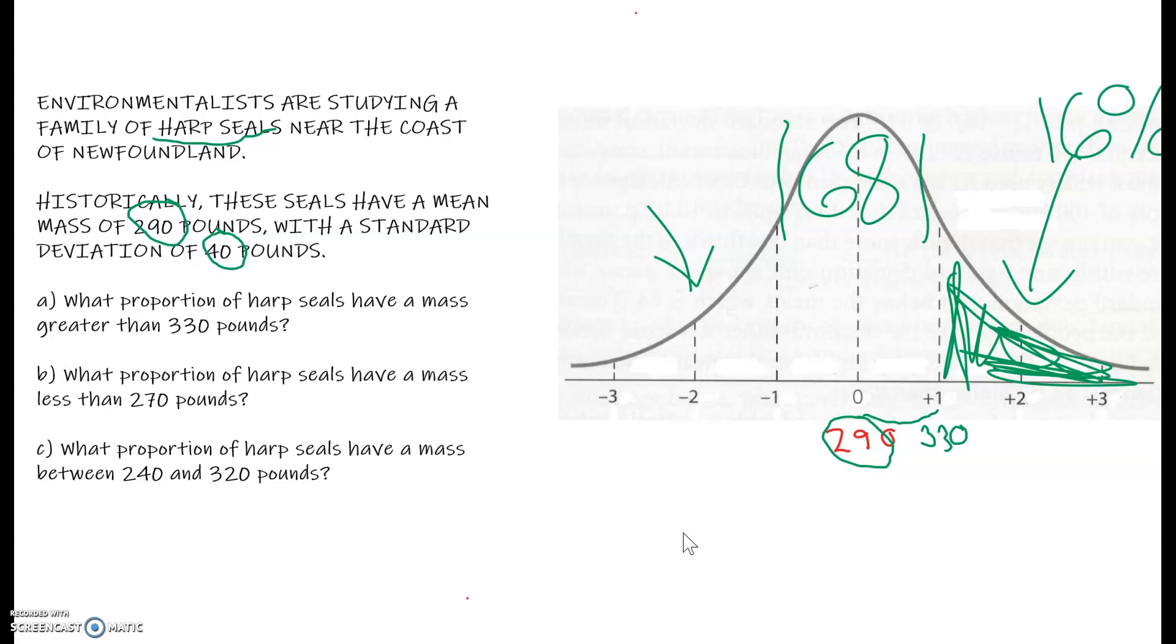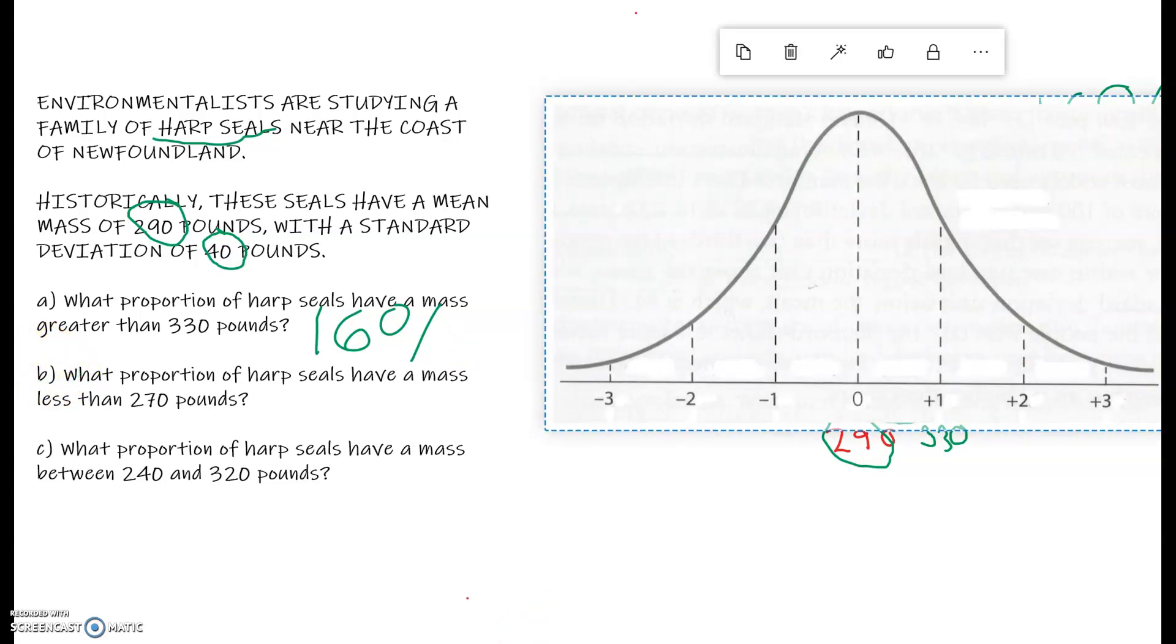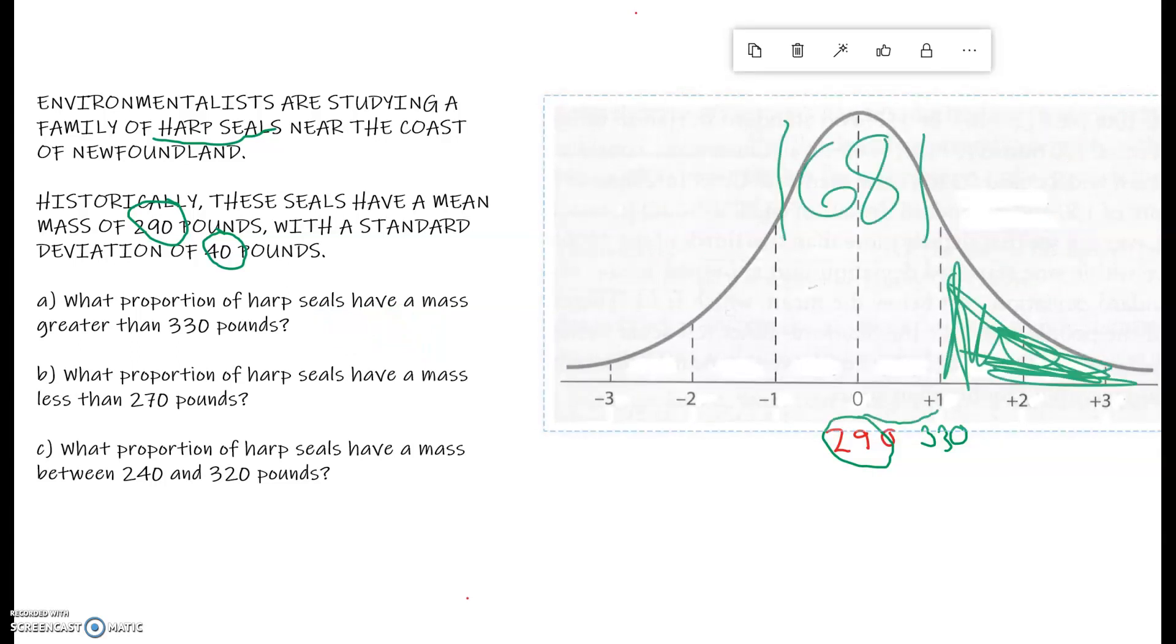So what proportion of harp seals have a mass greater than 330 pounds? 16%. Question B now says, what proportion of harp seals have a mass less than 270 pounds? So I'm going to go back to my picture here. I'm going to erase a lot of things.